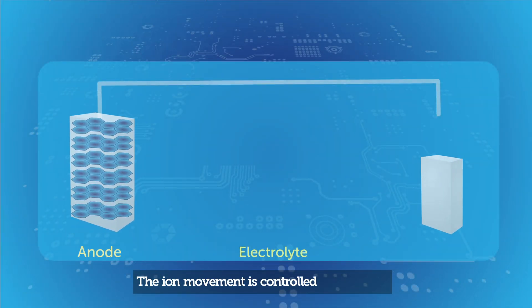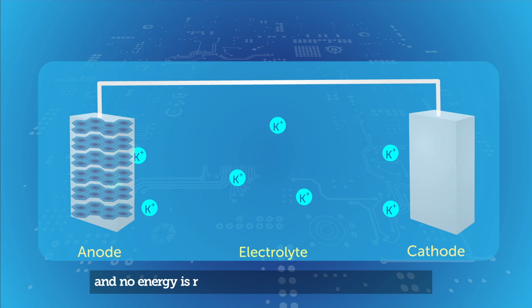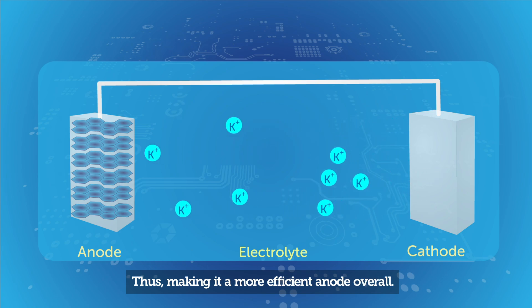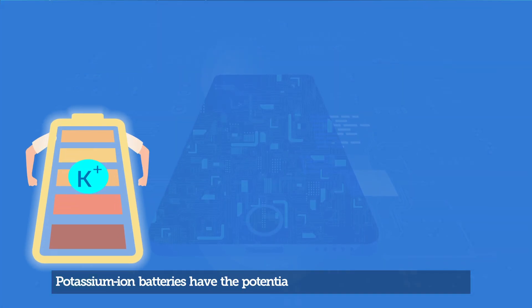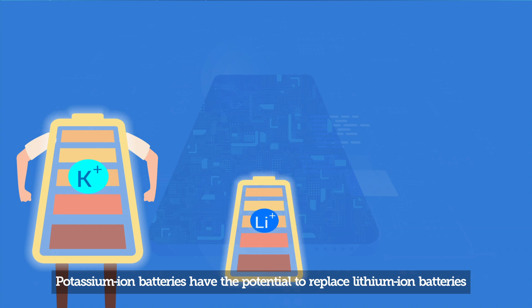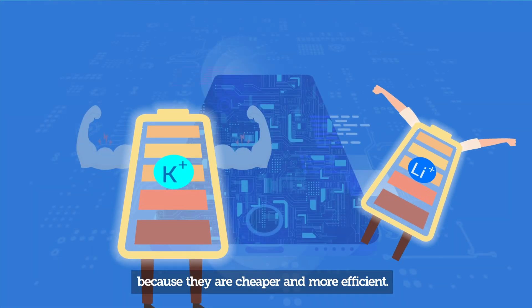The ion movement is controlled by diffusion and no energy is required to move the potassium ion back, thus making it a more efficient anode overall. Potassium ion batteries have the potential to replace lithium ion batteries because they are cheaper and more efficient.